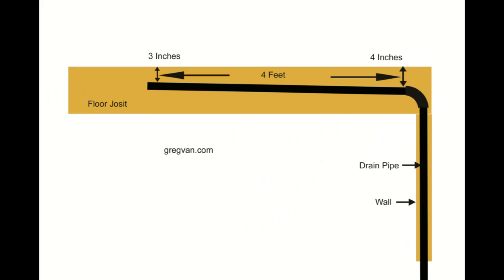What we have here is a drawing of a section of a floor. You can see I have the floor joist marked and then the drainage pipe. The water will be draining in the picture from left to right.